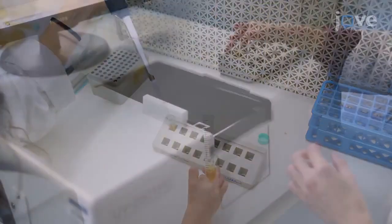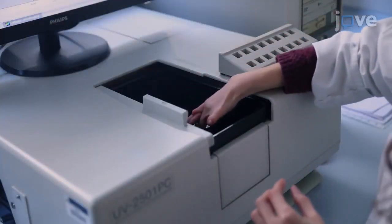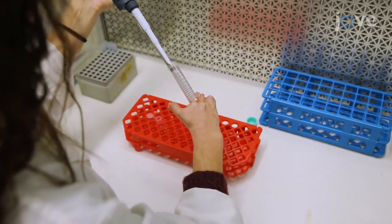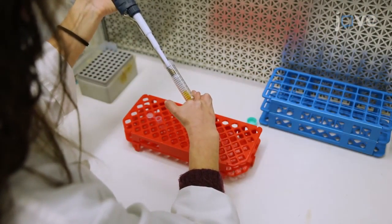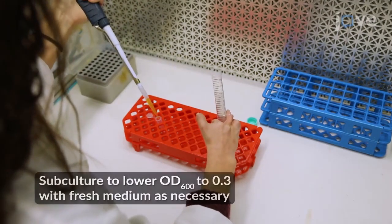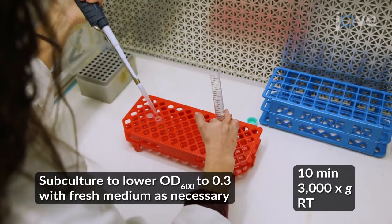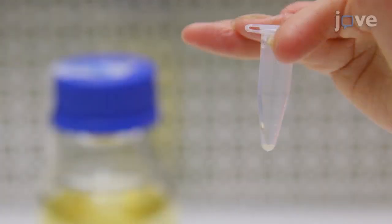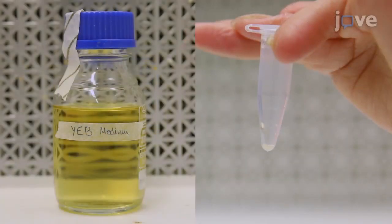For A. tumefaciens transformation, measure the optical density the next morning. When the optical density at 600 nanometers, or OD600, reaches 0.6 to 1, centrifuge 1 milliliter of the Agrobacterium culture and resuspend the pellet in 1 milliliter of fresh YEB medium without antibiotics.